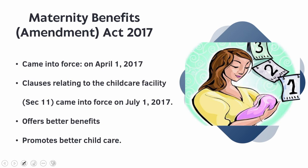Furthermore, in the event that a woman passes away within this time, maternity benefit will only be paid for the days leading up to and including the day of her passing. Also, under section 5 subsection 4, a woman who legally adopts a child under the age of three months, or a commissioning mother, will be eligible for maternity benefit — it is not only with respect to biological birth but also adoption — for a period of 12 weeks starting on the day the child is given to the adopting or commissioning mother.